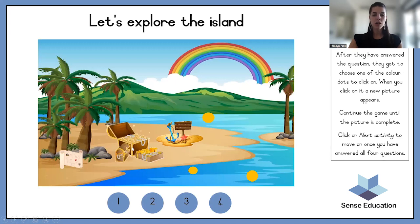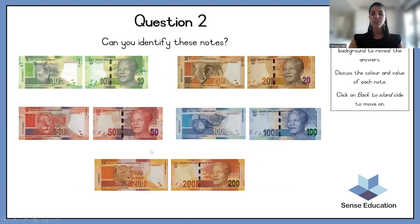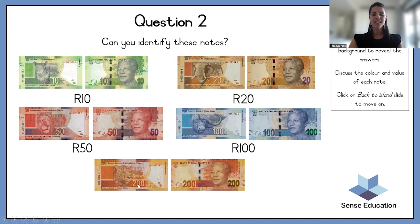Let's pick this one — it's a treasure chest! Can you identify these notes? Let's start up here. This is a 10 rand, 20 rand, 50 rand, 100 rand, and 200 rand. Wow! The numbers really help you, and you know that all the notes are rands — none of them are cents.